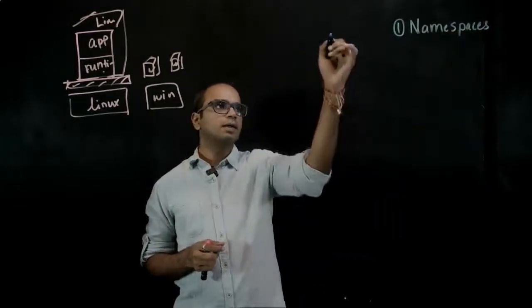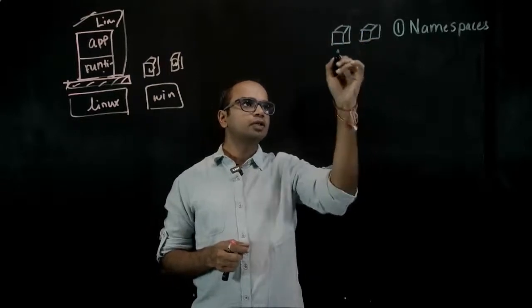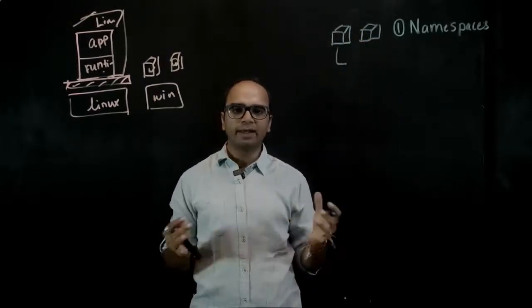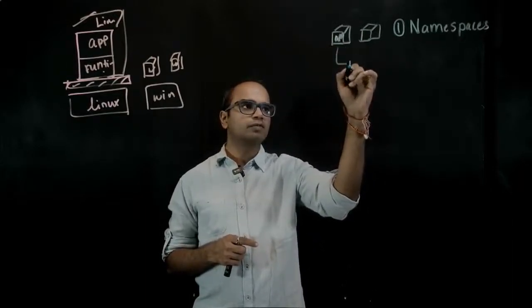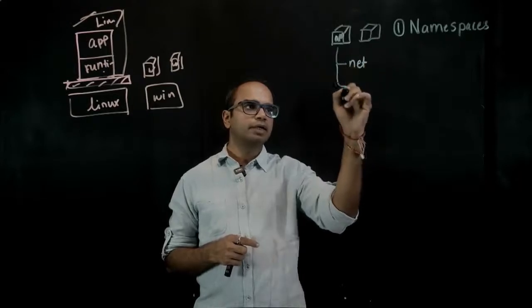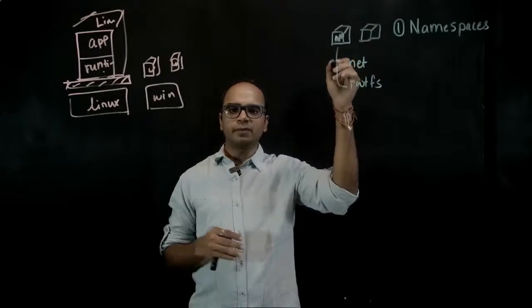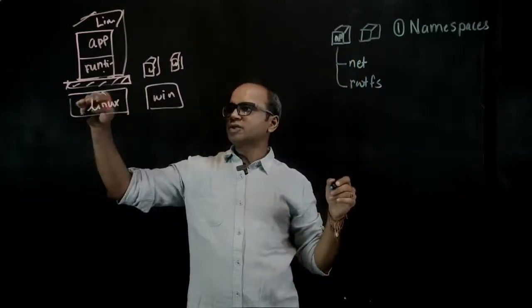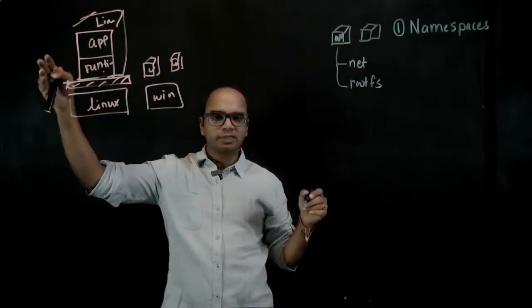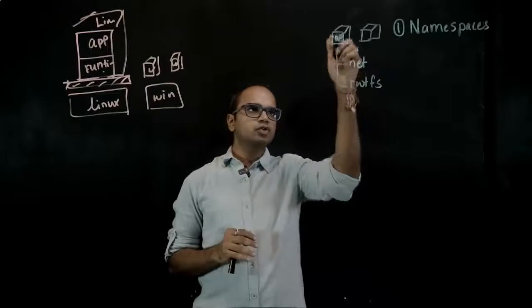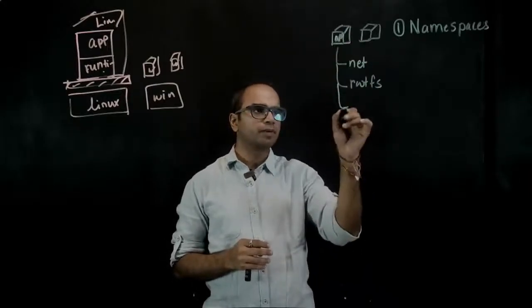The first such feature and the foremost feature is namespaces. So, what appears as a container is nothing but a bunch of namespaces which are created by the Linux kernel for you. So, when you run your application, it creates a network namespace, for example. It creates a root file system. That is how you are able to run, let's say, on top of one machine, you can run a CentOS container, a Red Hat container, and any other version of distribution of Linux. Because each of this container has its own root file system.